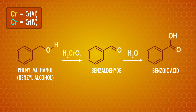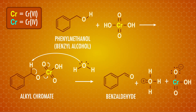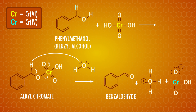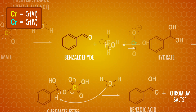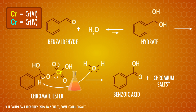Benzaldehyde can be further oxidized to benzoic acid, which is used as a food preservative. In the mechanism, the oxidation reaction removes hydrogen atoms from the benzyl alcohol molecule – specifically two hydrogen atoms to make the aldehyde, one from the hydroxyl group and the other from the adjacent carbon. This explains why tertiary alcohols won't oxidize – they don't have any hydrogens attached to the carbon with the hydroxyl group. Meanwhile, the chromium is reduced from chromium-6, which is orange in solution, to chromium-3, which is green, giving a handy color change to indicate that oxidation has taken place.